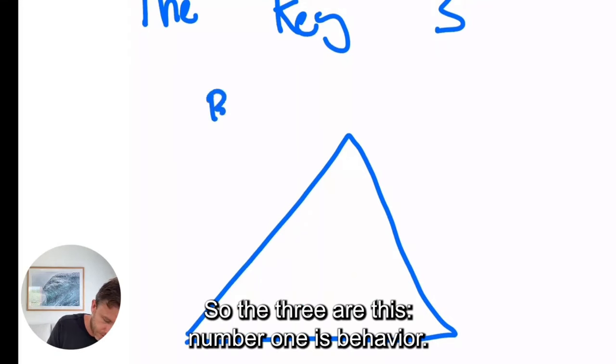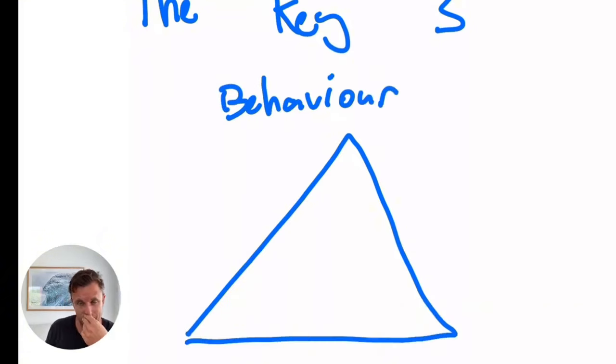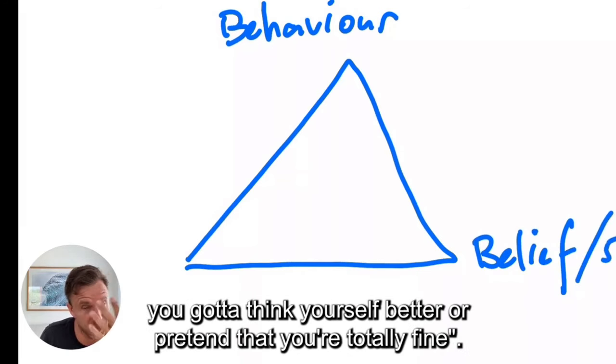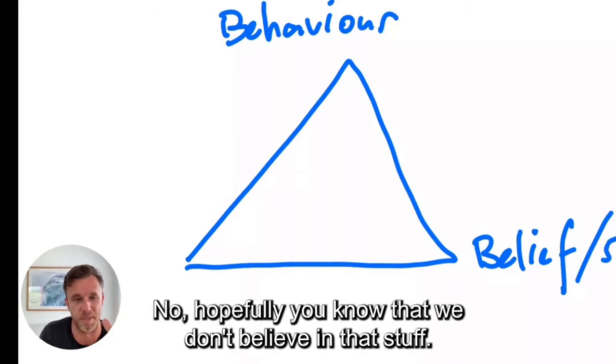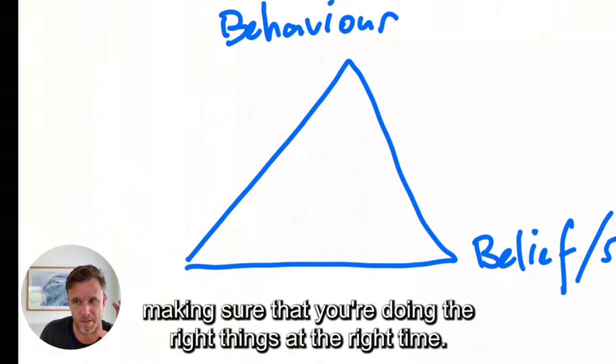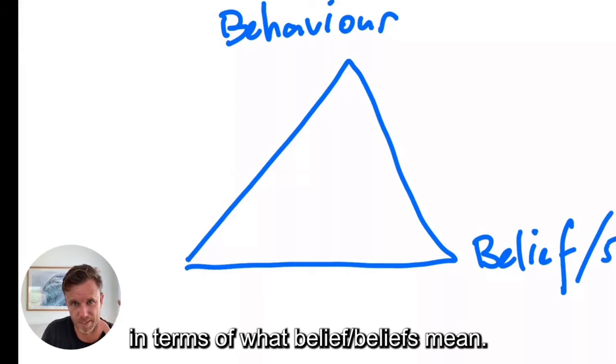So the three are this. Number one is behavior and we're going to do a deep dive into this. Number two is belief and we're going to be talking about beliefs. And by the way this isn't like a mindset thing where it's like, oh you've got to think yourself better or pretend that you're totally fine. No, hopefully you know that we don't believe in that stuff. We're all about having a holistic approach and making sure that you're doing the right things at the right time.